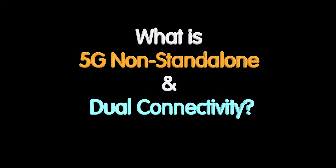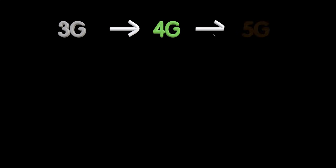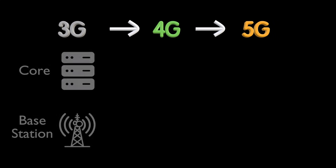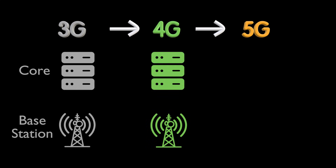Have you ever wondered how telecom operators upgrade their networks from one generation to the next? How do we move from 3G to 4G and then to 5G? From 3G to 4G, operators launched both the 4G core and the 4G base station at the same time. It worked, but it was costly and very abrupt.